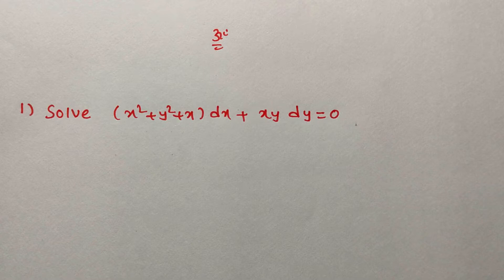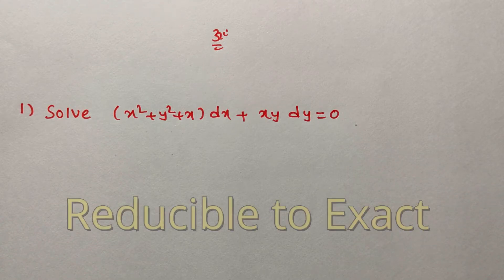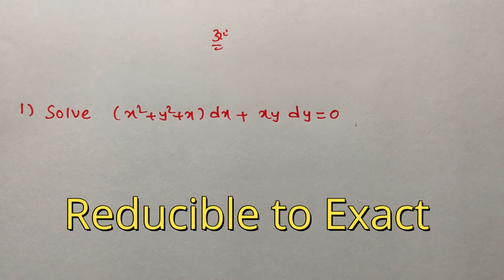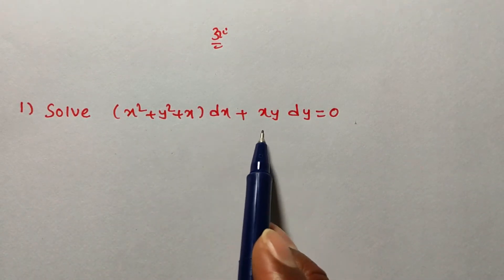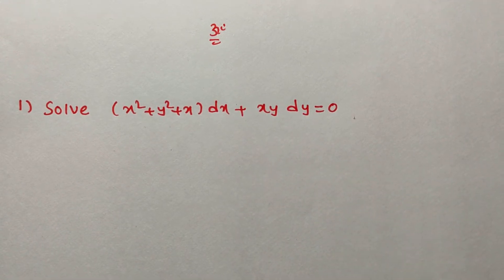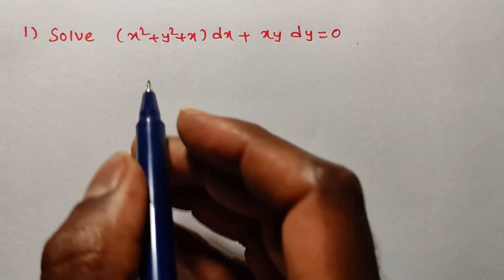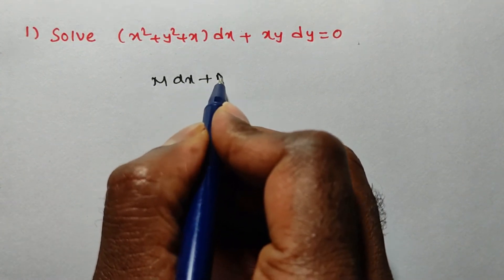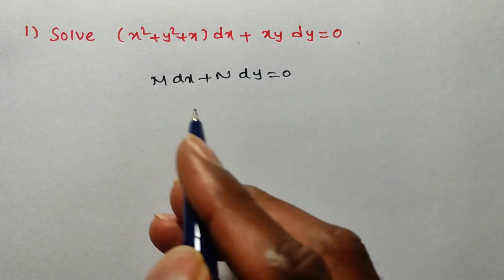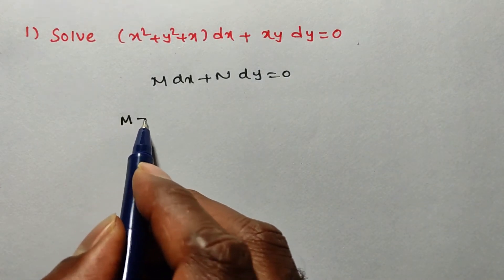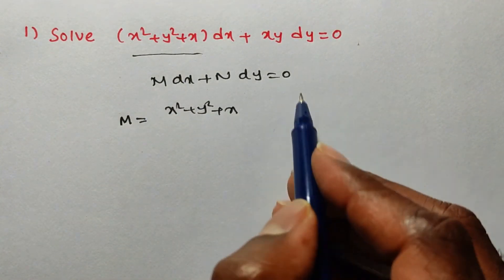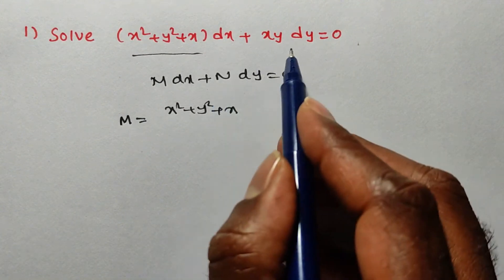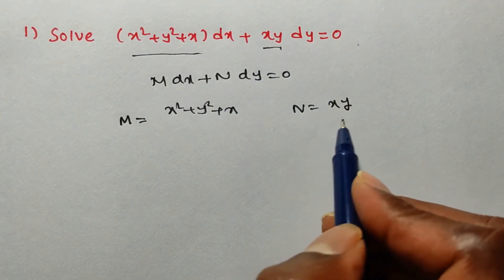In that, exact or non-exact differential equation. If it is non-exact, we are going to make it exact by multiplying an integrating factor. The given problem is: solve (x² + y² + x) dx + xy dy = 0. By observation, we can say the given problem is in the form of M dx + N dy = 0. So M is x² + y² + x, and N is xy.